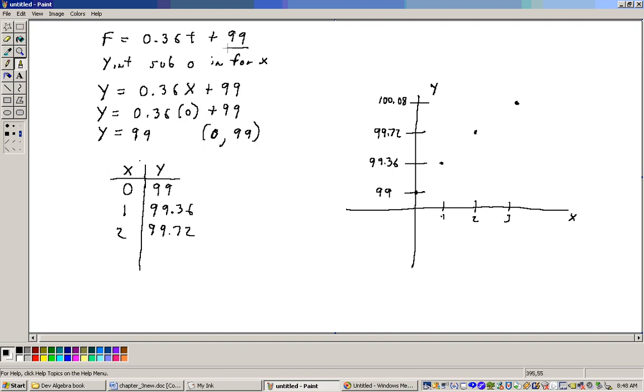So in other words, that's the Y part of your Y-intercept right there. It's actually 0, 99. That means that time 0 at the start, right when you started measuring this person's temperature, their temperature was 99 degrees. That's a coordinate. 0 on the X-axis, 99 on the Y-axis.